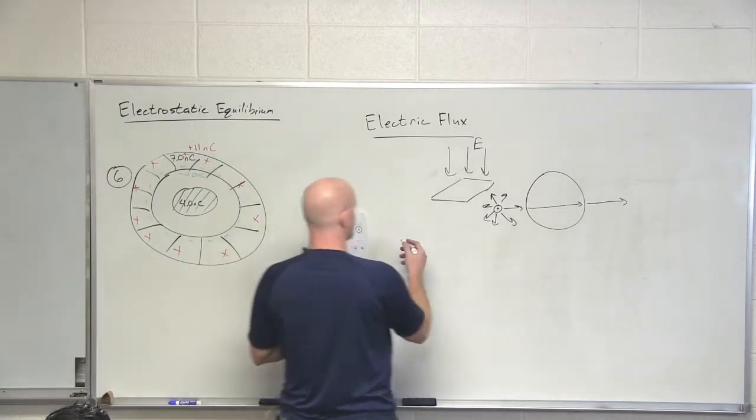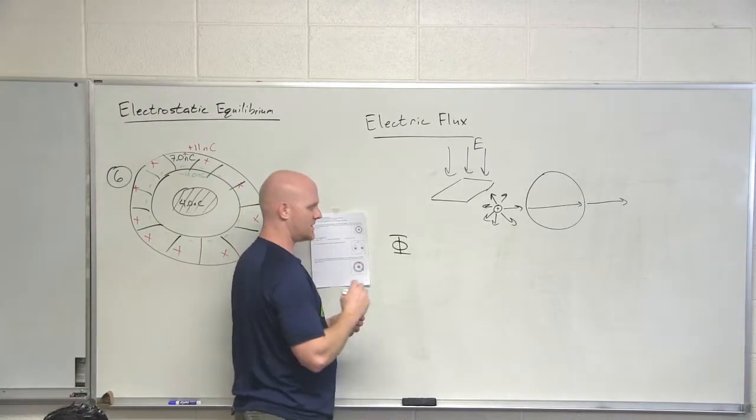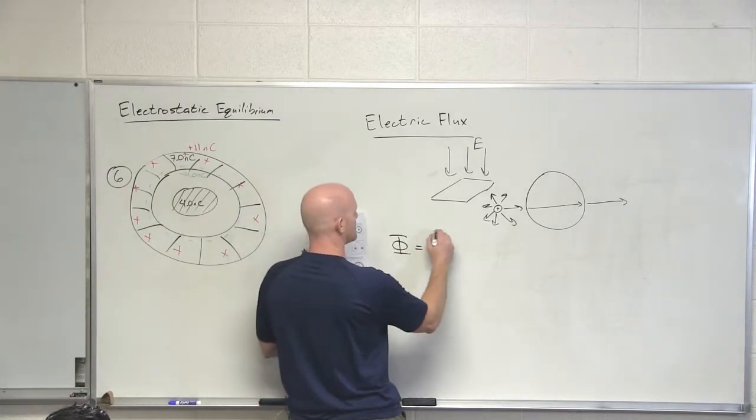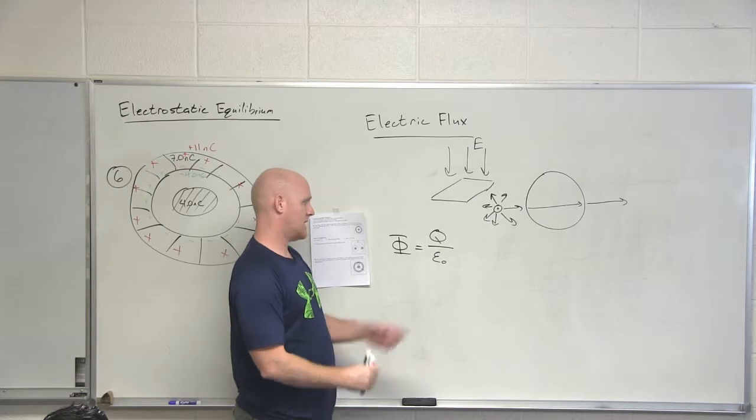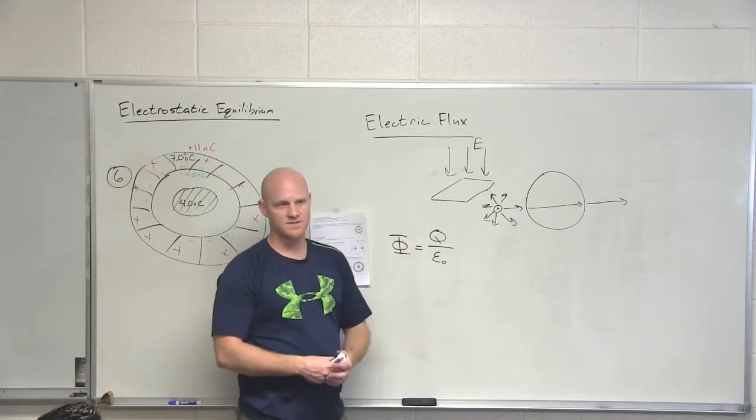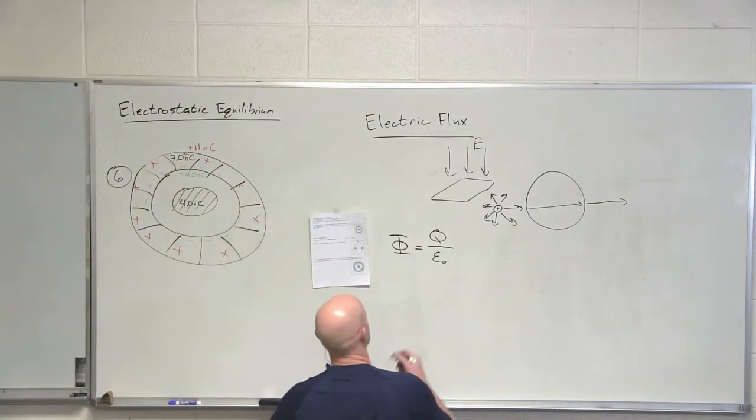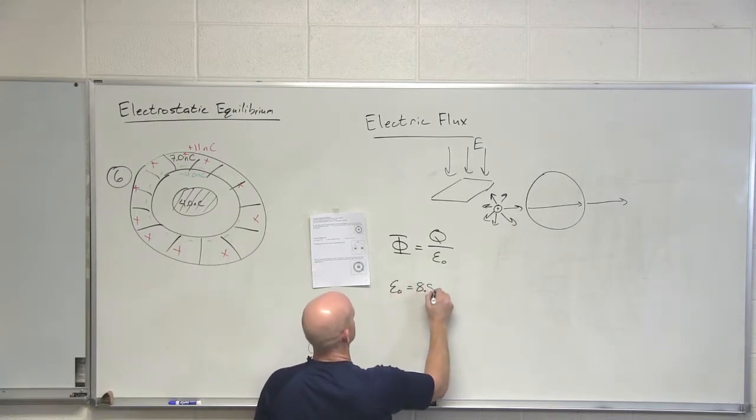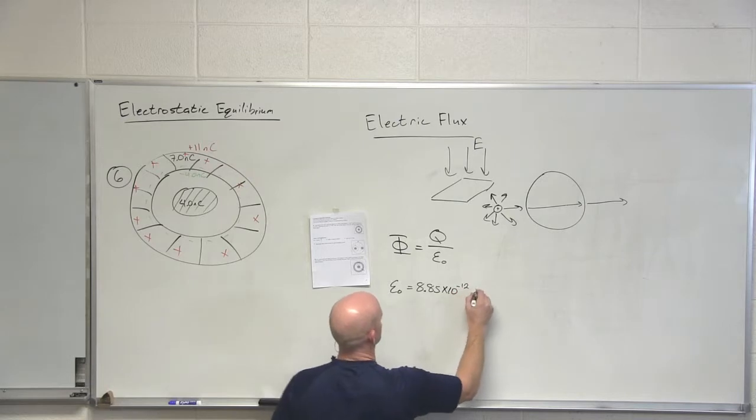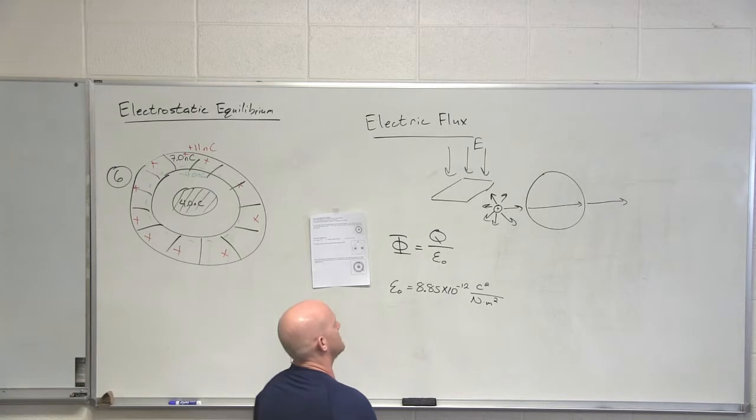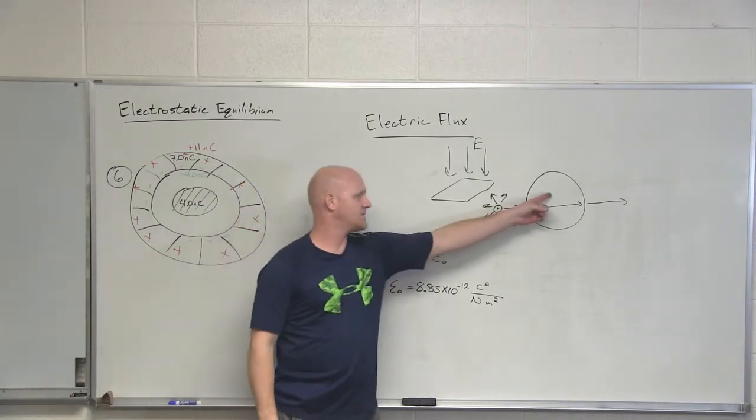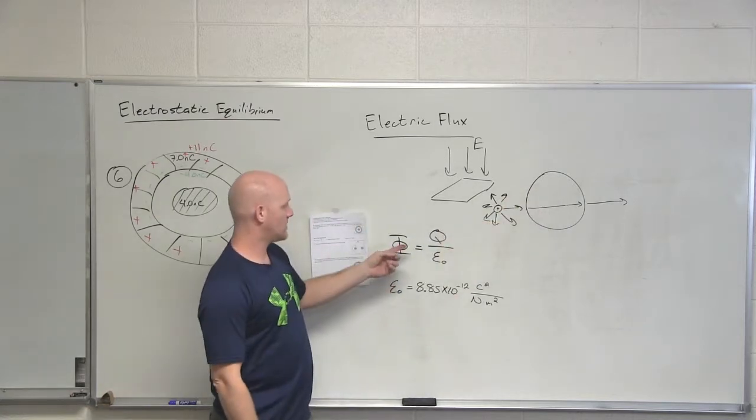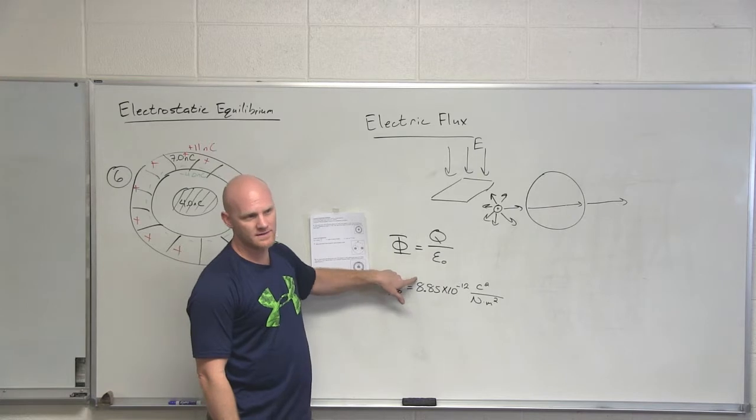And so what you find is electric flux has this lovely symbol here. And the only way you get a net electric flux is if you have a net charge inside a closed volume. And what are that net charges? Divided by epsilon naught, which is the permittivity of free space. Another constant. But we can see that if there is no charge inside, there shouldn't be any net flux. And so if there is a charge inside, though, there is a net flux.